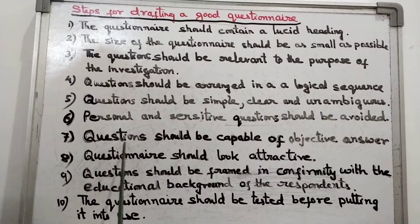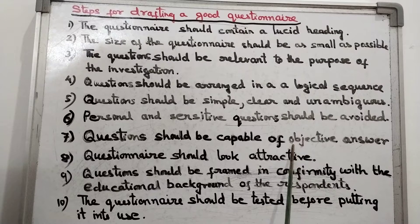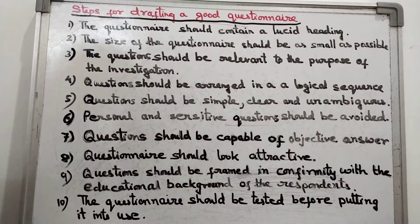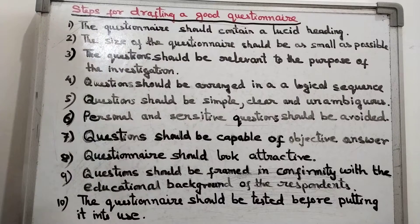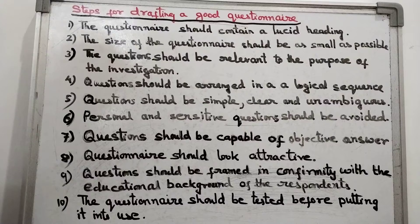The seventh point is that questions should be capable of objective answers. We should seek objective answers, meaning the questions should be framed so that respondents can answer in an objective way — such as true or false, or yes or no. This makes it easy for the respondent to fill in the questionnaire.